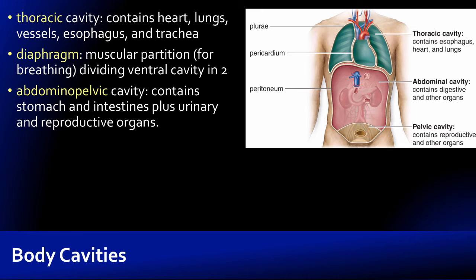There is an abdominal cavity and a pelvic cavity, although there's no clear physical boundary between them — there's no diaphragm separating them — but we draw a distinction between abdominal and pelvic organs based on their location. We recognize this is fundamentally one cavity. To combine the terms, we drop the 'al' from abdominal, replace it with 'o,' and combine it with pelvic to get 'abdominopelvic cavity.' So more accurately, the ventral cavity consists of the thoracic and abdominopelvic cavities divided by the diaphragm.